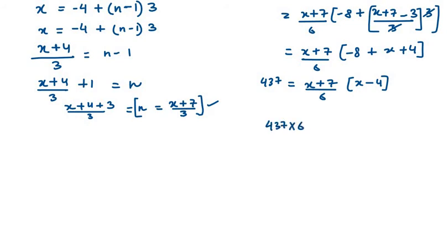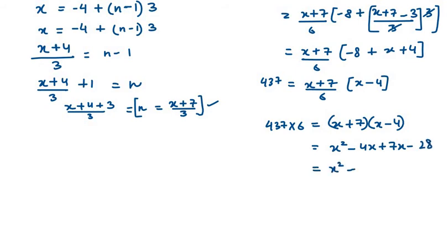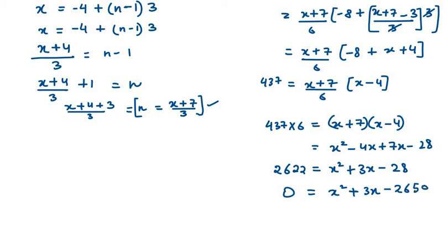Multiplying both sides by 6: 437 times 6 equals (x plus 7)(x minus 4). Expanding the right-hand side: x squared minus 4x plus 7x minus 28, which gives x squared plus 3x minus 28. Since 437 times 6 equals 2622, bringing 2622 to the other side gives: x squared plus 3x minus 28 minus 2622 equals 0, so x squared plus 3x minus 2650 equals 0.